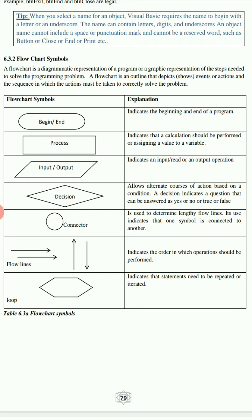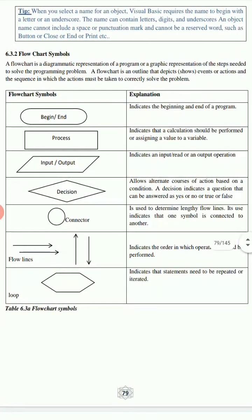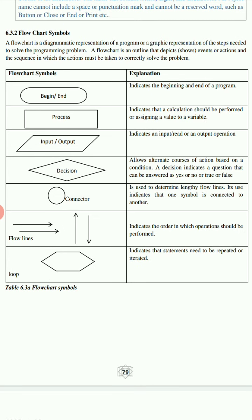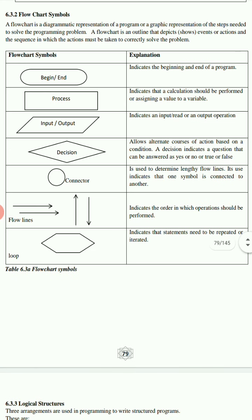Before we go through variables, let's briefly go through the symbols. The first symbol on the table is begin and end. Things you should note: begin is placed right at the top of the flowchart and end is the last thing in the flowchart. You will have begin at the top with the oval shape symbol, and end at the bottom with the same oval symbol.